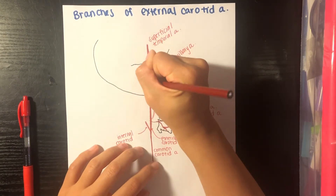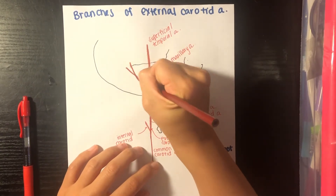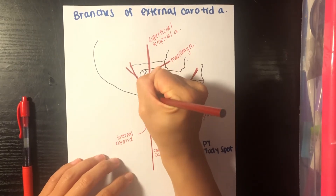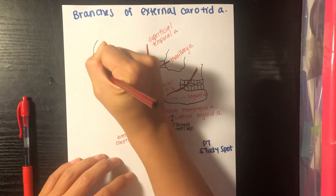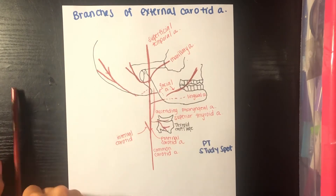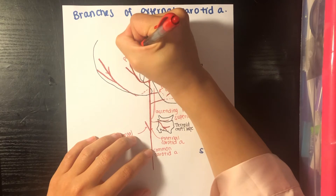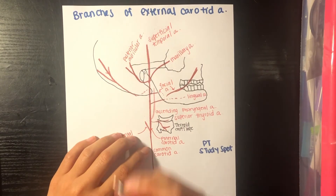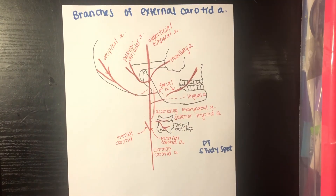Behind the external acoustic meatus, you have your branch over here, and then another one going to the occipital bone. The branch here is the posterior auricular artery, and the last one is your occipital artery.